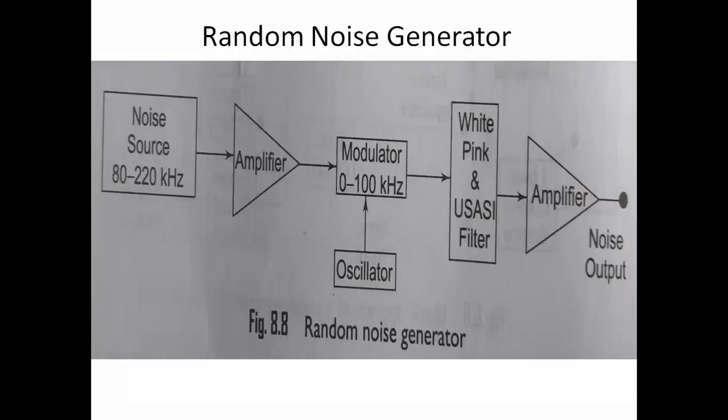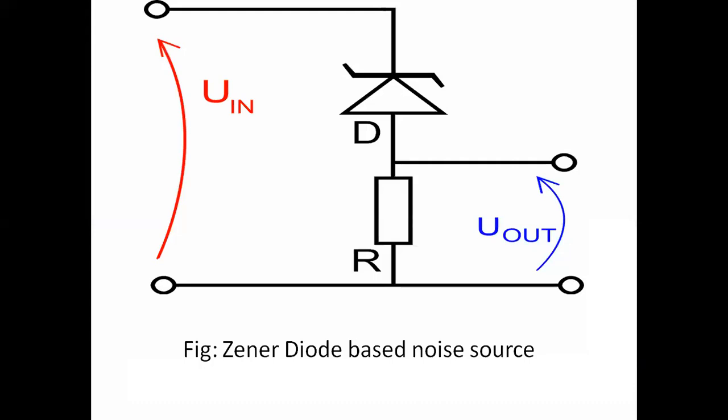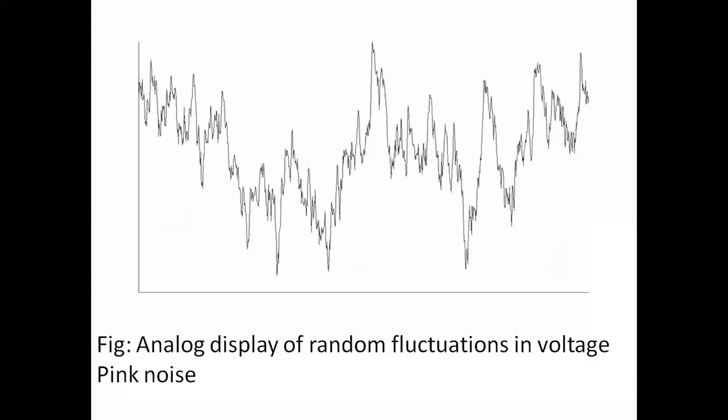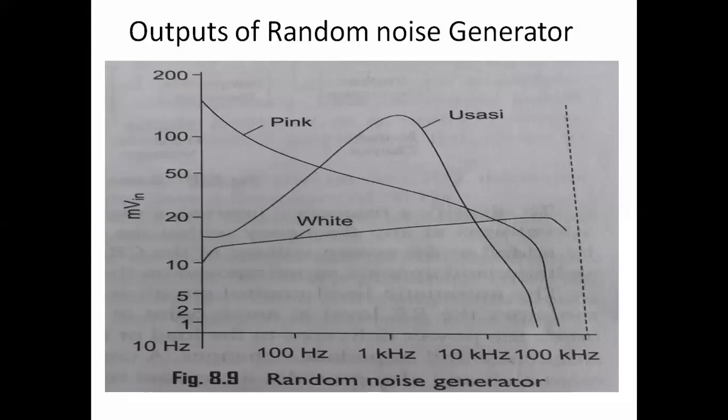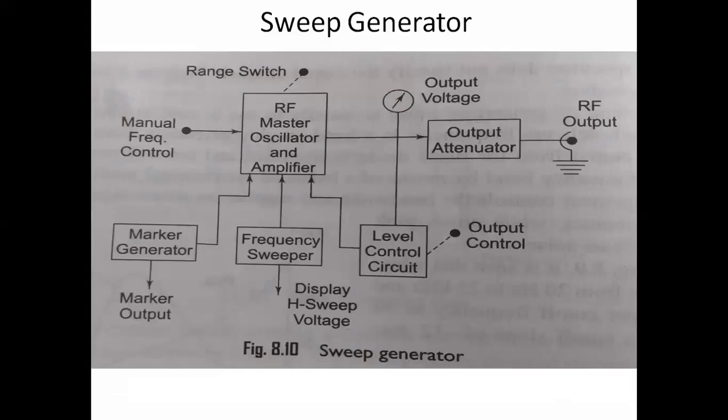Different noise signals are generated. One example shows the frequency bands of pink, white, and Vasasi noises in a graph sheet. And coming to the next topic: the sweep generator.